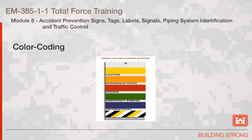This is an example of the OSHA color coding system. Yellow indicates caution. Orange typically indicates dangerous parts. Red indicates a dangerous situation. Green indicates either emergency egress or safety-related information. Blue provides informational information. And white, black, and yellow in a diagonal is typically housekeeping or traffic-related information.